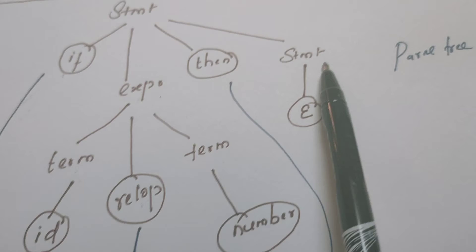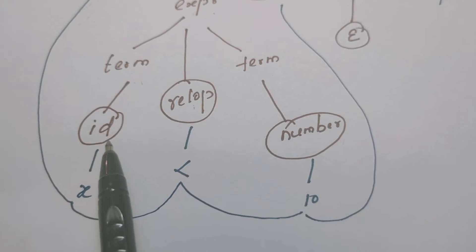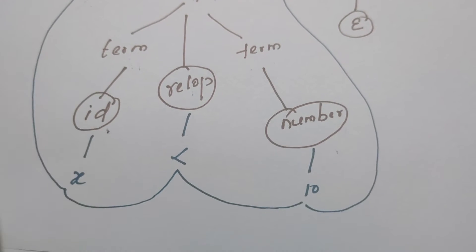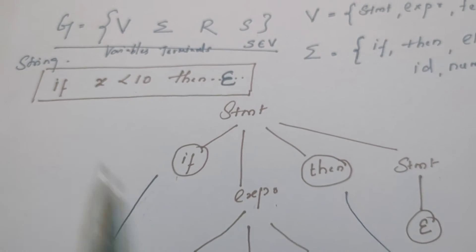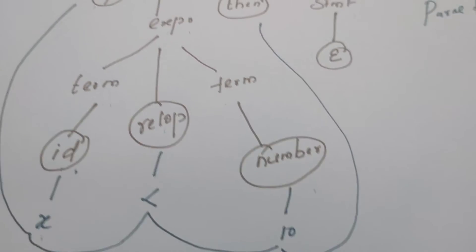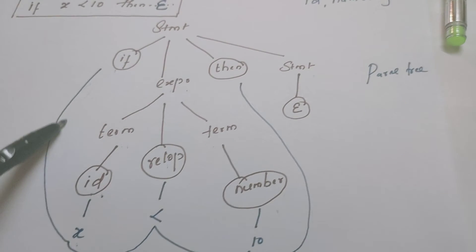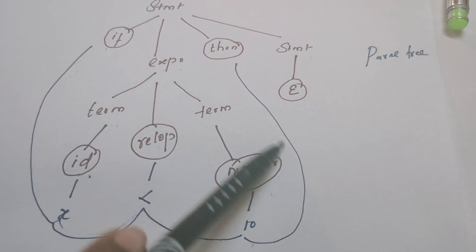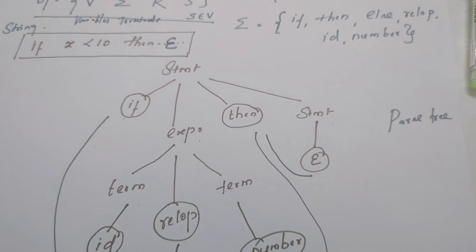This statement is replaced by epsilon. Then the first term is replaced by identifier, and the second term is replaced by number. This identifier is replaced by x and this number is replaced by 10 as per the string. So we derived the string 'if x less than 10 then epsilon' from the parse tree.